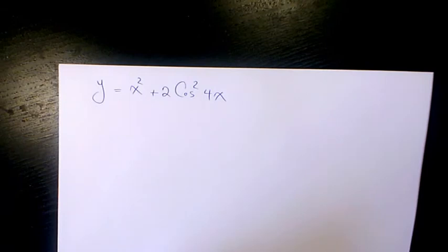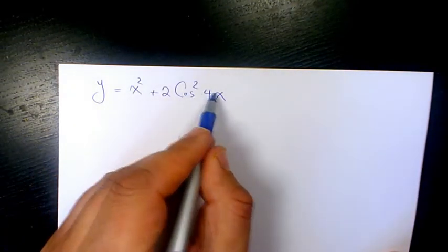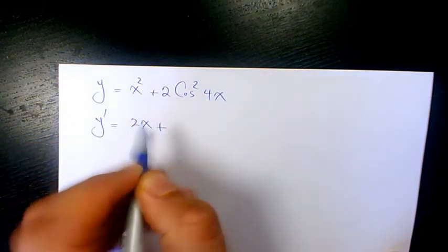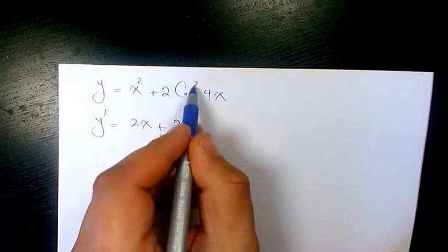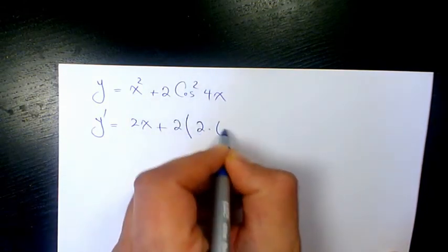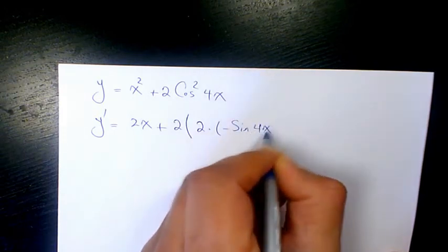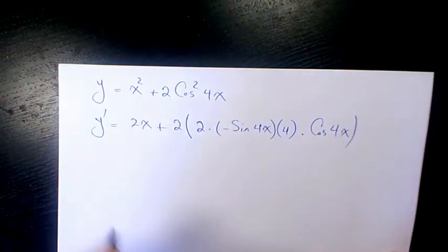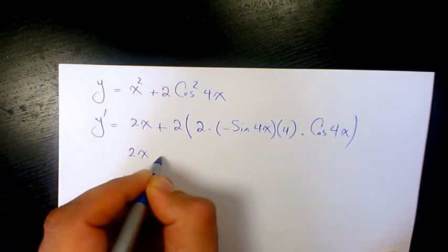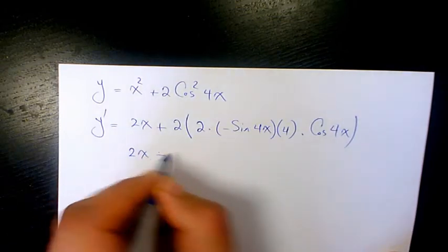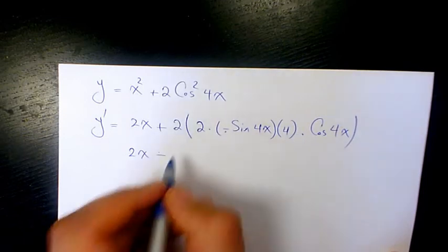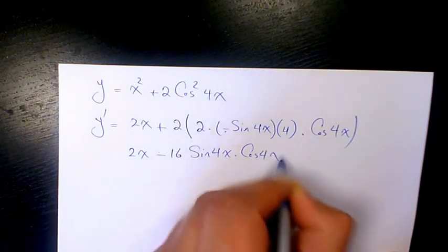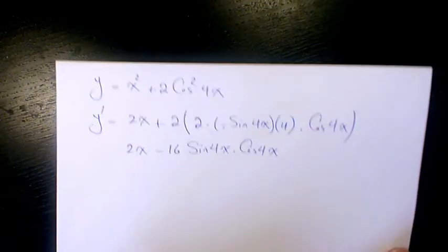Next example: y equals x squared plus 2 cosine squared 4x. Y prime — the derivative of x squared is 2x. Then we have 2 times the derivative of cosine squared 4x, which is 2 times negative sine 4x times 4 times cosine 4x. That gives 2x minus 16 sine 4x times cosine 4x.